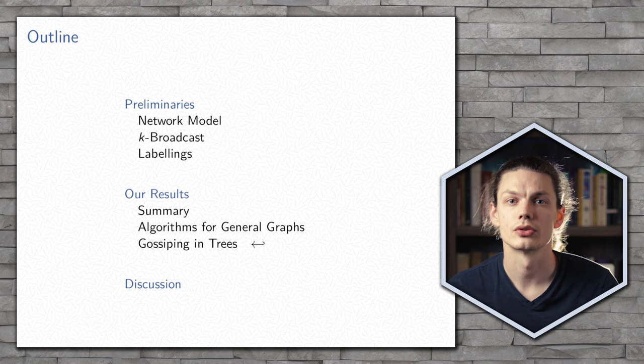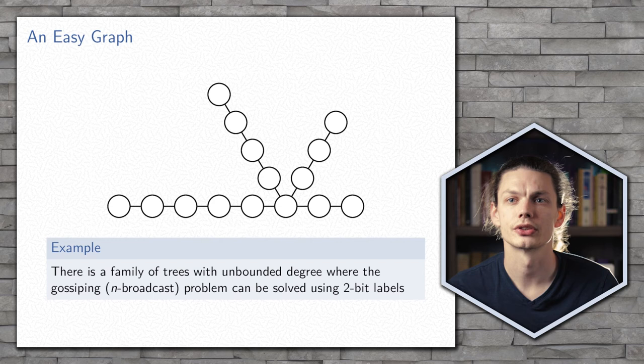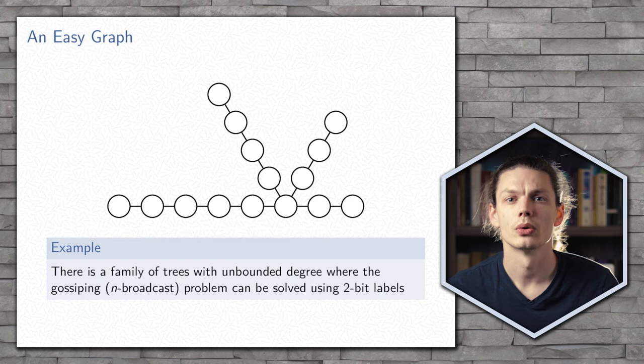This is what motivated our results for gossiping in trees. This graph here is constructed by attaching paths of length 2, 3, 4, up to some n to a common vertex.